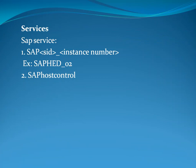Whenever we install SAP, some services are created — these are the SAP services. The service name follows the format SAP SID Instance Number. For example, if the SID is HED and the instance number is 02, then SAP_HED_02 is the SAP service. The second SAP service is SAP Host Control. When we install SAP, these two services are created.